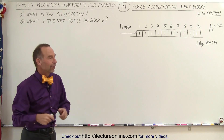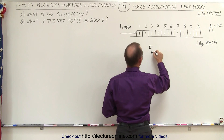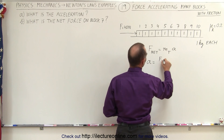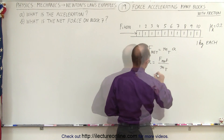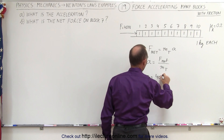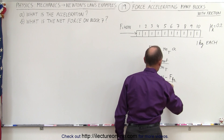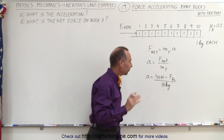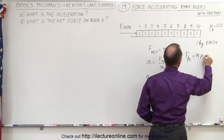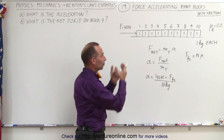First, what we're going to do is find the acceleration of the system. We can say that the F-net on the whole system is equal to the total mass times acceleration, or the acceleration equals the net force divided by the total mass. On a flat surface, the normal force is simply the weight of the blocks and of course the floor pushing back.